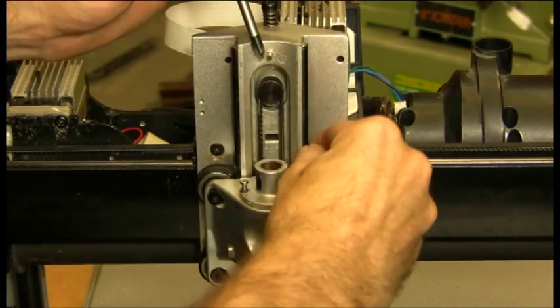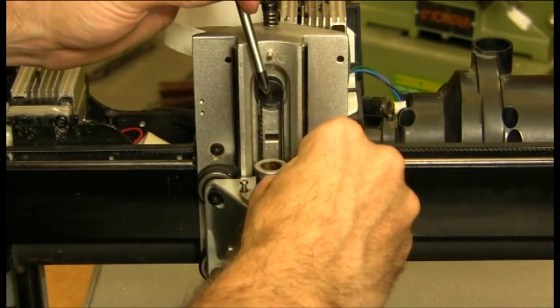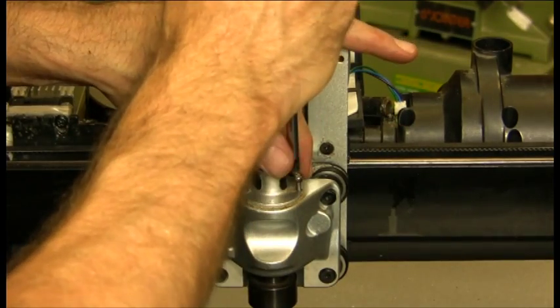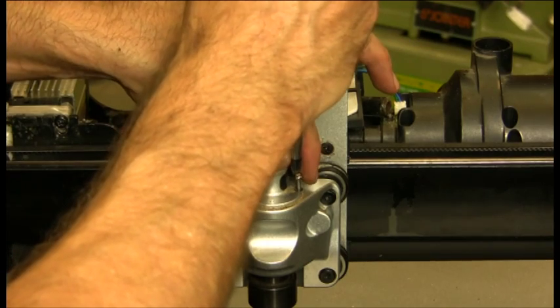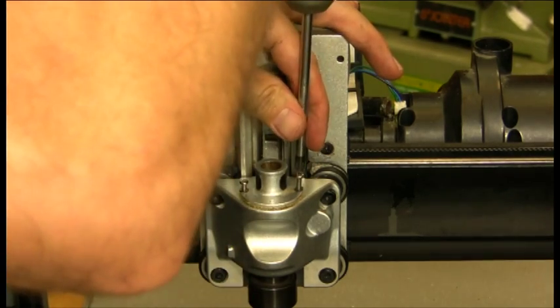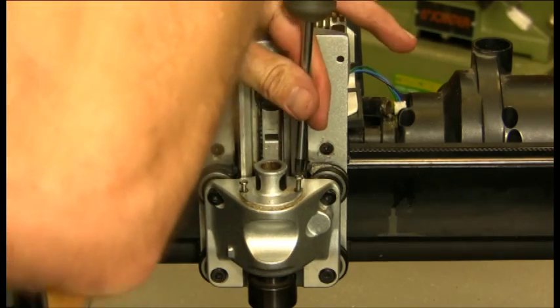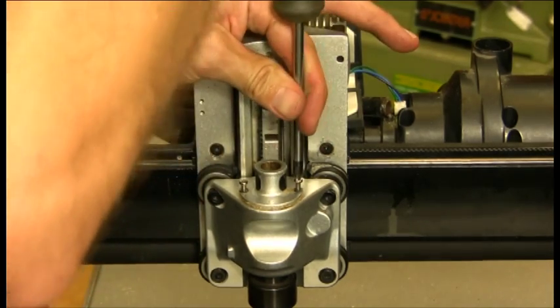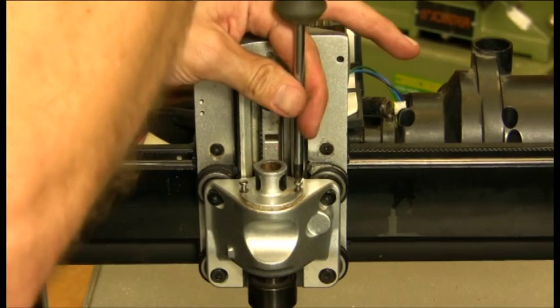So if we replace the two screws, another tip is to have a magnetic screwdriver that makes taking the machine apart and putting it back together very easy.